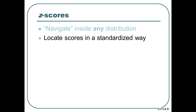If you just knew that a score was such and such number of points from the mean — say, I studied three more hours than average — you don't know what that means. Maybe a lot of people study three more hours than average, or maybe three more hours is way beyond what anybody studies. You don't really know unless you have variability included. So instead, we count in standard deviations.